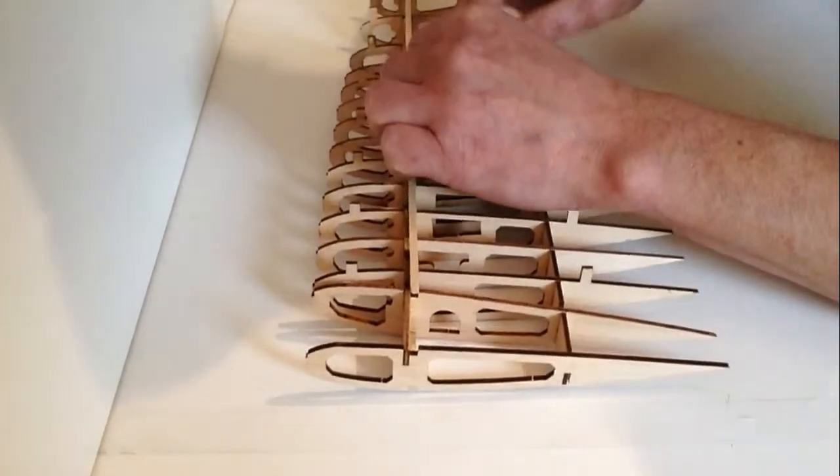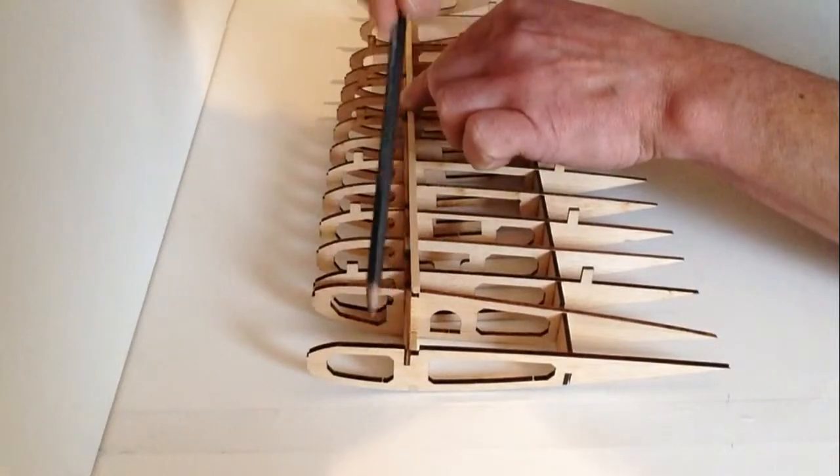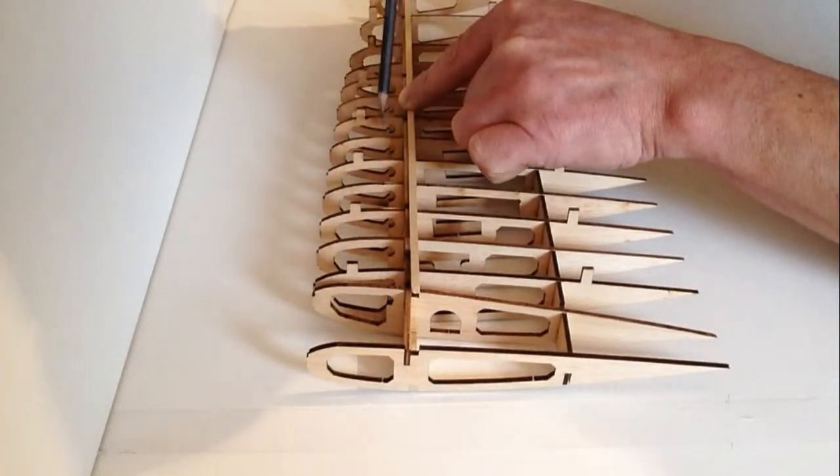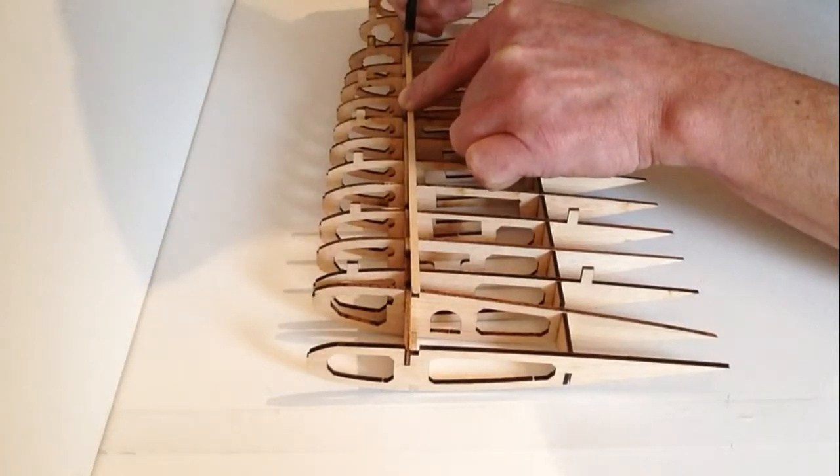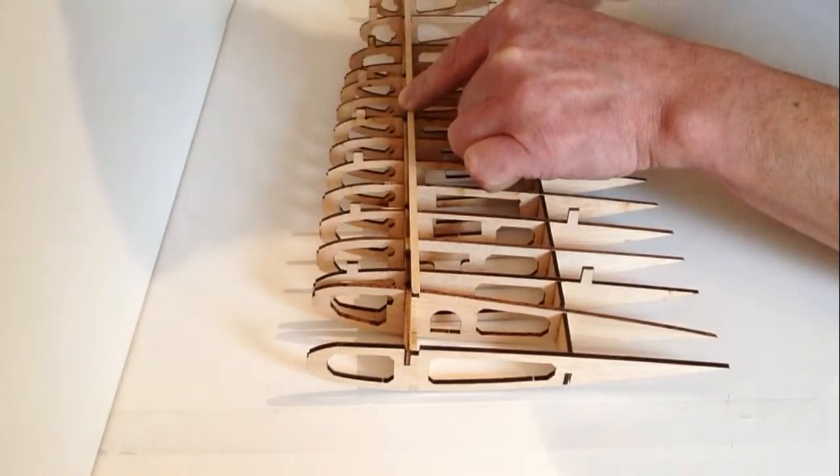Notice it there. Now if you count from the end: 1, 2, 3, 4, 5, 6, 7, 8, 9, 10, 11—it's the 12th rib but also known as rib 16. So mark that off.